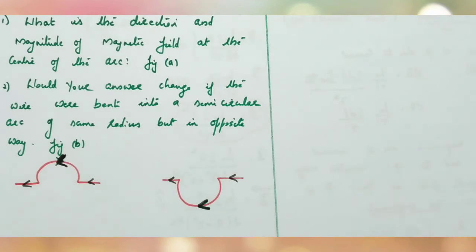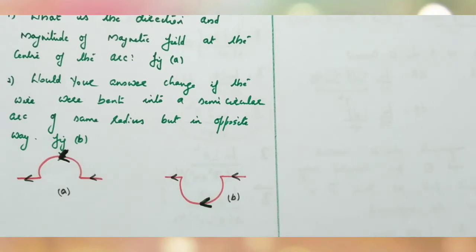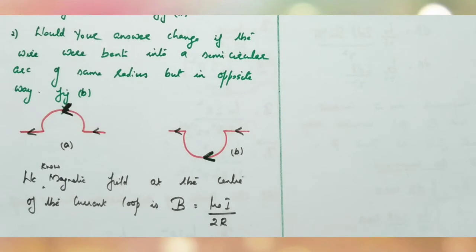We have to find out the magnetic field at the center of this semicircular arc in the first case and in the second case. We know the magnetic field at the center of a circular current loop is B equals mu-0 I divided by 2R. If it is a semicircular current loop, then the magnetic field at the center will be B equal to mu-0 I divided by 4R.